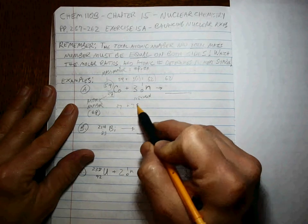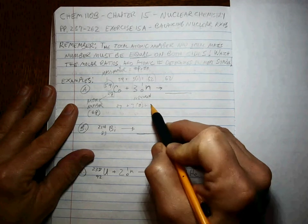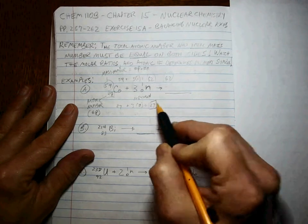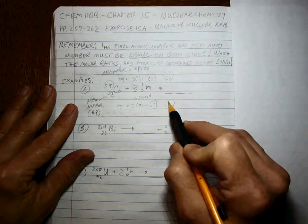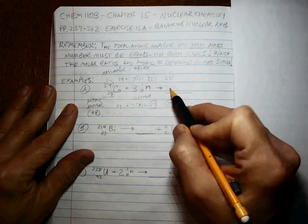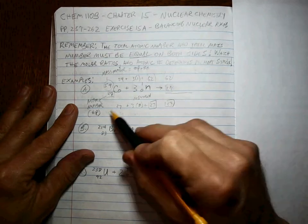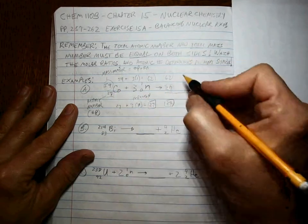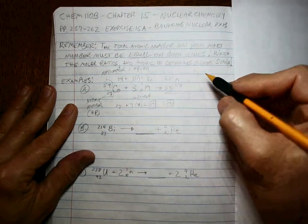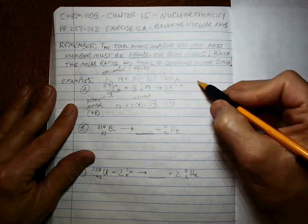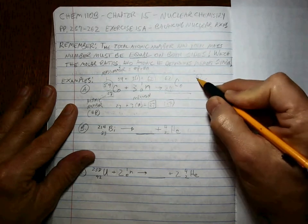So what are we adding here? 27 from here plus 3 times 0 is 27 on the left, so we have to have 27 on the right. So if that's the atomic number of what's on the product, we already know that that's cobalt, so cobalt-62 is the correct answer there. Piece of cake.